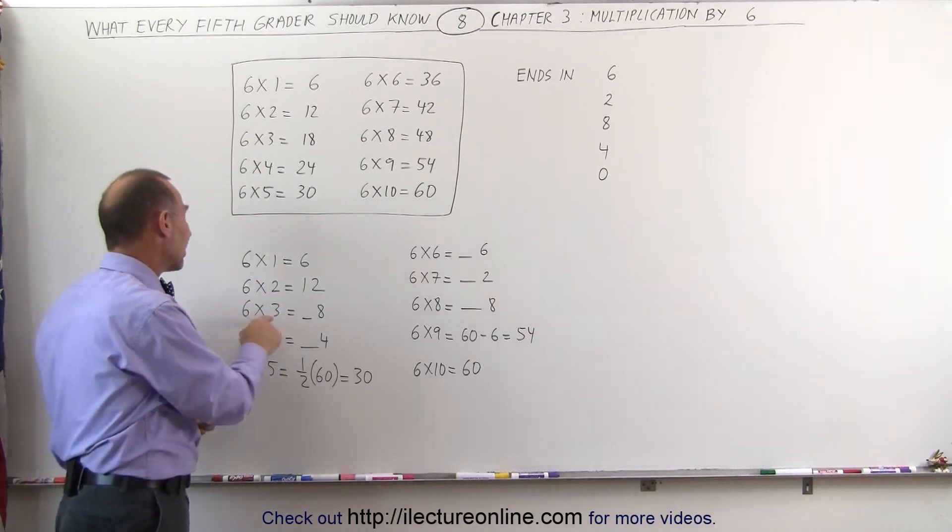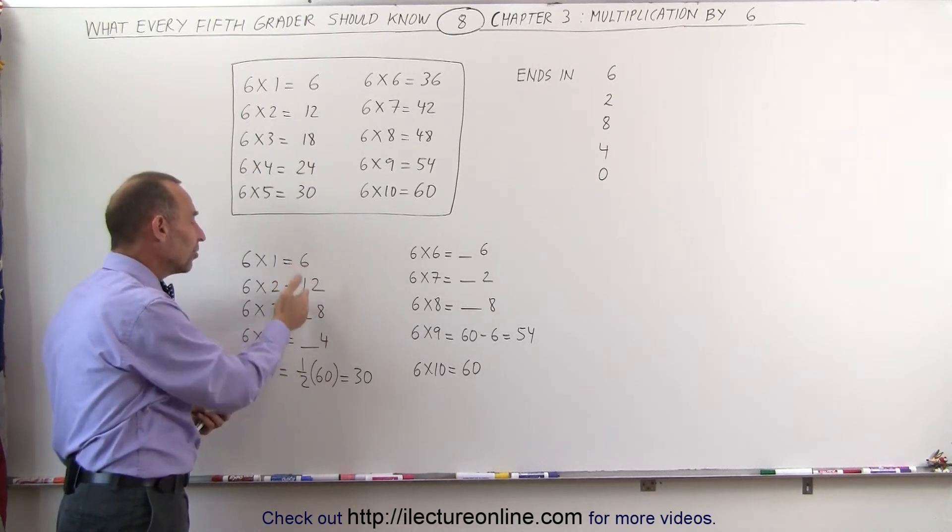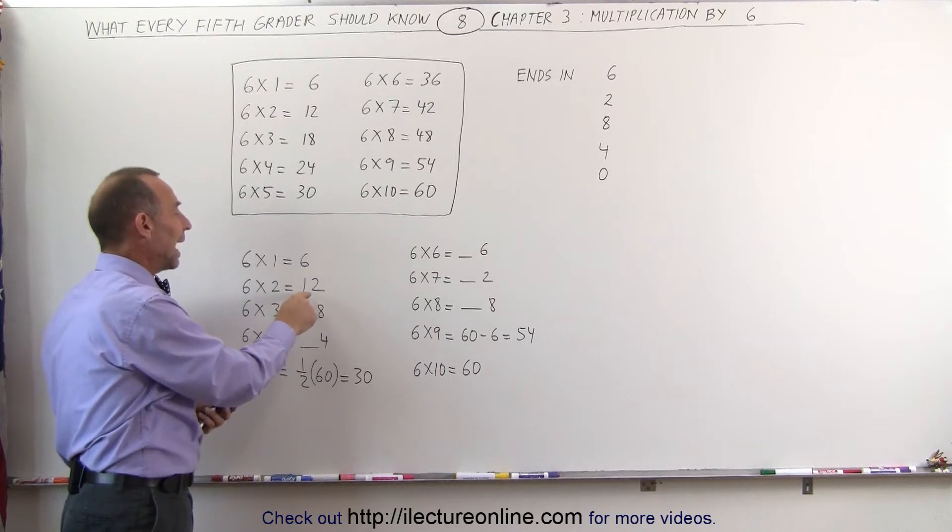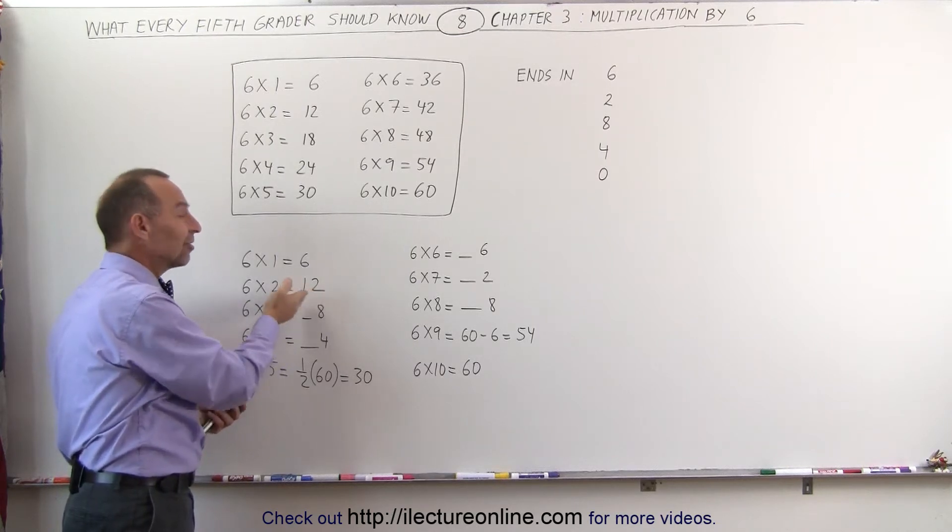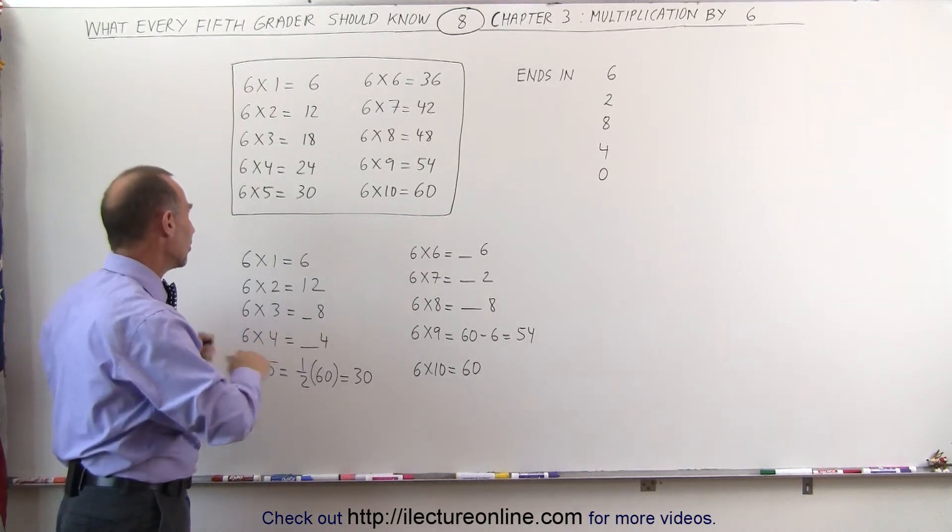The next one, 6 times 3, you know it should end up in an 8. And what number goes in front of that? Well, it's still 1, because when you add to 12, if you add 6 to 12, you still get a number less than 20, so it's going to be 18 in this case.